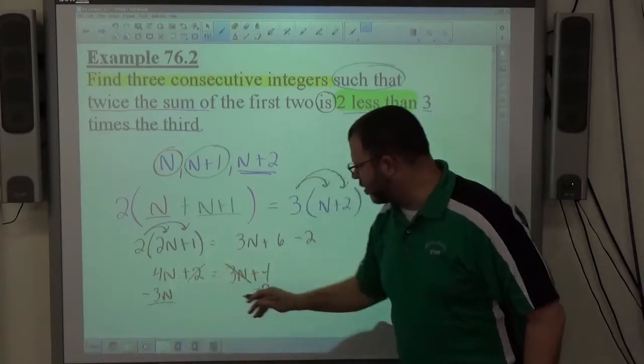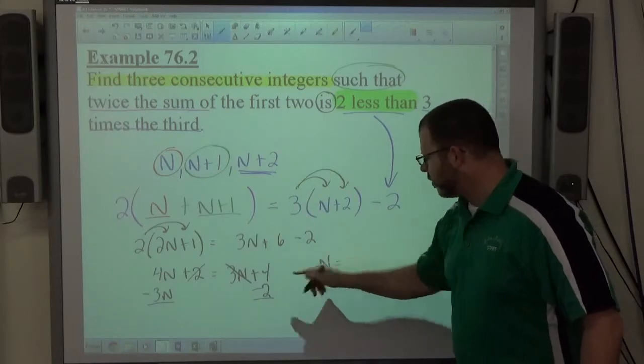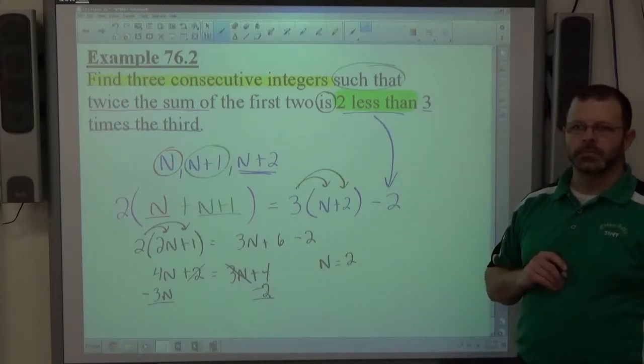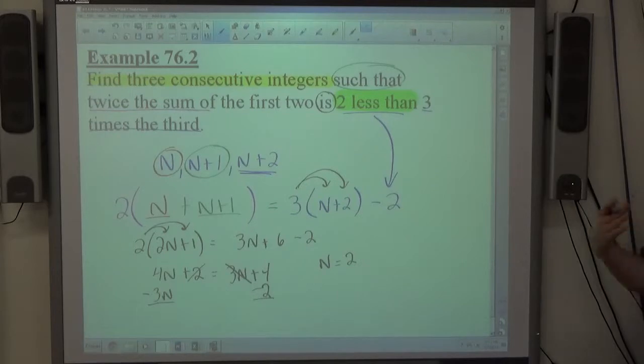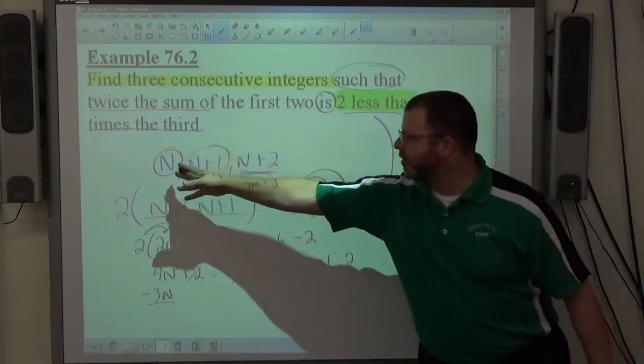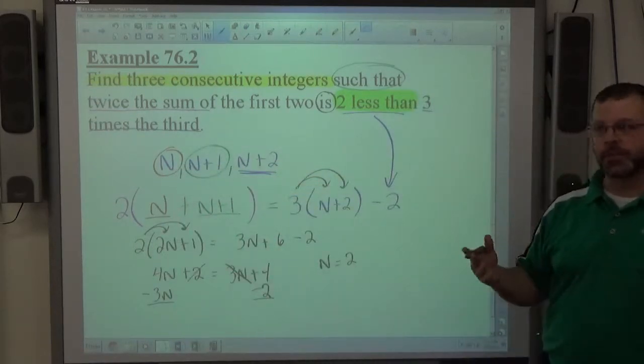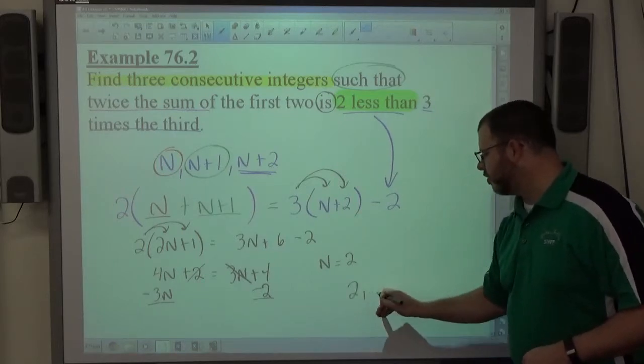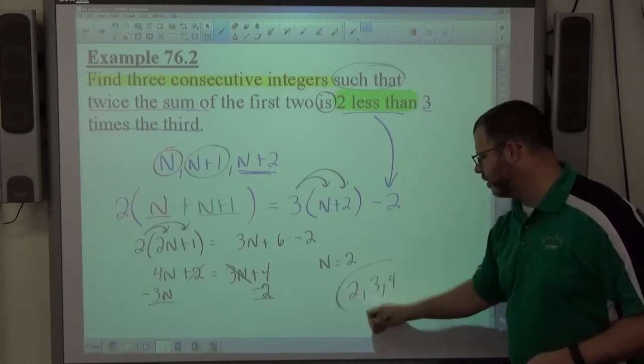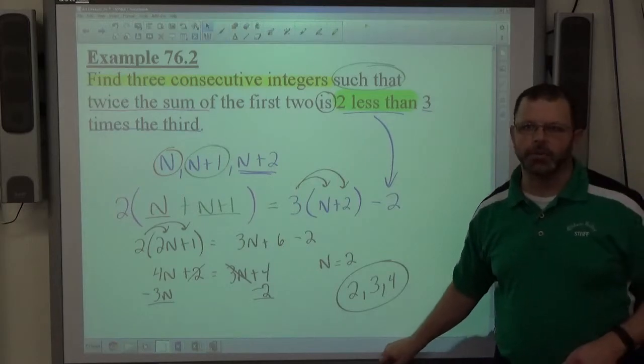Left-hand side, four n minus three n makes one n. Right-hand side, four minus two makes two. So, that just tells me n equals two. n is representing my first integer. We want a list of three integers, so first integer is two. Add one, get three. Add one to that, get four. Two, three, and four would be all three integers.